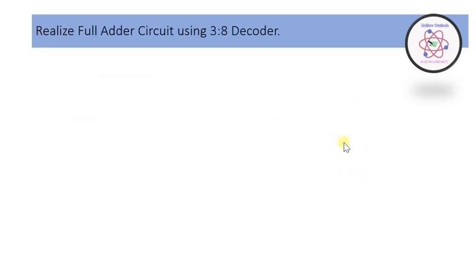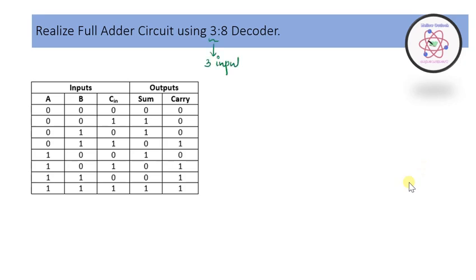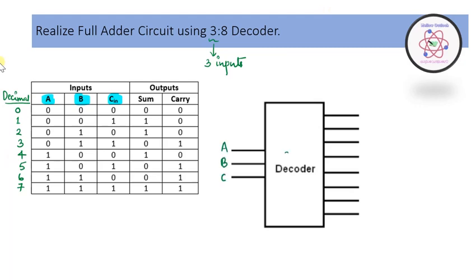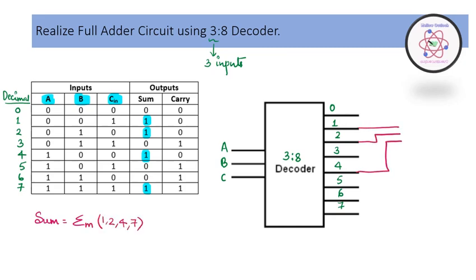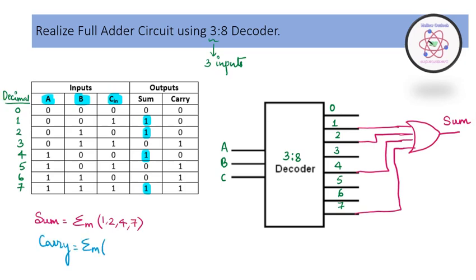For the full adder using a 3-to-8 decoder, we look at the truth table and highlight outputs corresponding to logic 1 for sum and carry. The sum equals summation m(1, 2, 4, 7) and carry equals summation m(3, 5, 6, 7). Using a 3-to-8 decoder, we combine the corresponding min terms using OR gates to represent the sum and carry outputs.